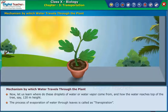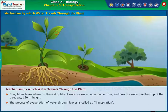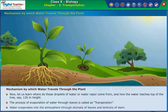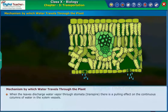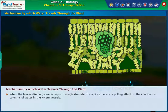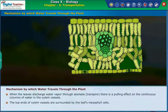The process of evaporation of water through leaves is called transpiration. Water evaporates into the atmosphere through stomata of leaves and lenticels of the stem. When the leaves discharge water vapor through stomata and transpire, there is a pulling effect on the continuous columns of water in the xylem vessels. The top ends of xylem vessels are surrounded by the leaves' mesophyll cells.